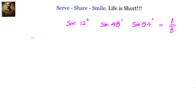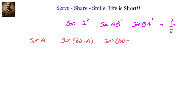We have to prove that sin 12 degrees multiplied with sin 48 degrees into sin 54 degrees equals 1/8. We will use the formula: sin A into sin(60 minus A) into sin(60 plus A) equals 1/4 sin 3A.